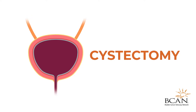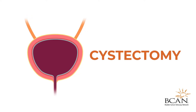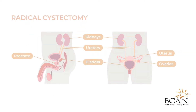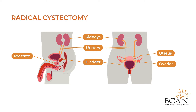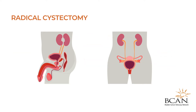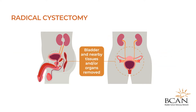Cystectomy is a surgery that involves the removal of the bladder. The most common type of cystectomy is known as a radical cystectomy, where the bladder and nearby tissues and/or organs are removed. After the bladder is removed, the surgeon also needs to create a new way for urine to be stored and leave the body. This is known as a urinary diversion.